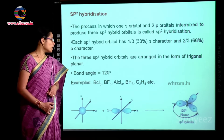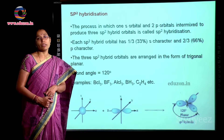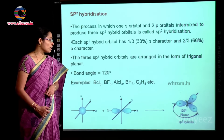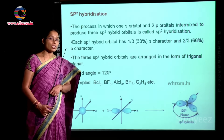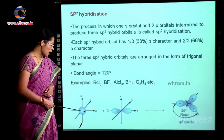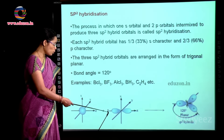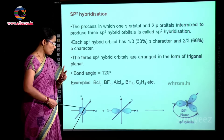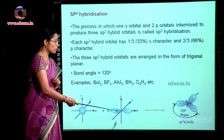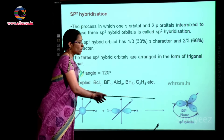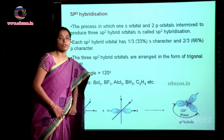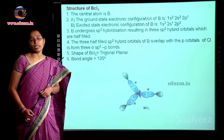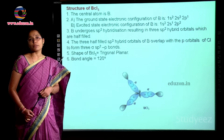Examples of sp² hybridization include BCl₃, BF₃, AlCl₃, BH₃, and C₂H₄. One s orbital and two p orbitals — which are dumbbell-shaped — intermix; the total three orbitals form three sp² hybrid orbitals arranged in a trigonal planar shape with a bond angle of 120 degrees.